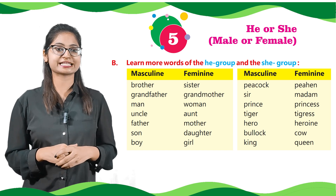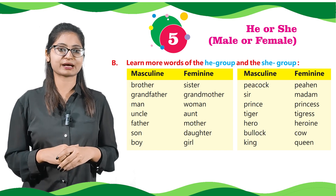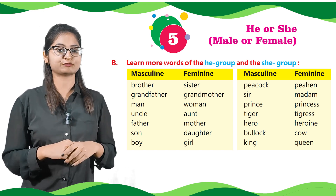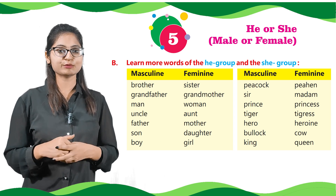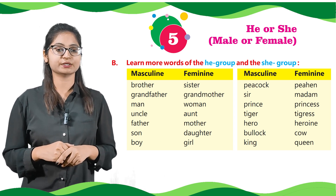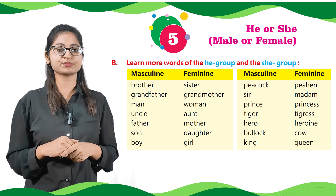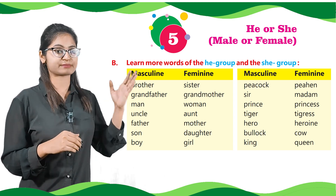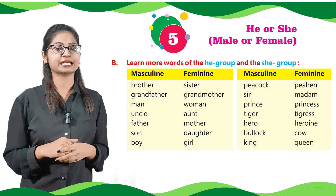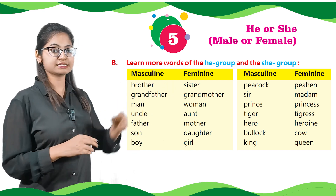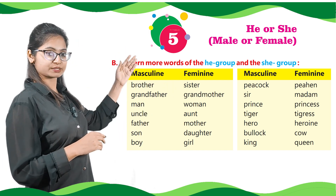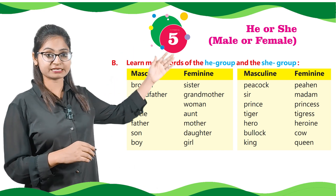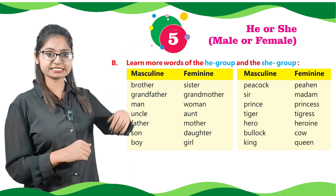Let's move to Part B — learn more words of the he group and the she group. As you can see, there are two boxes: masculine and feminine. In the masculine section, brother, and in the feminine section, sister.